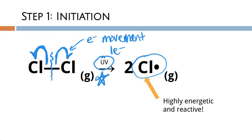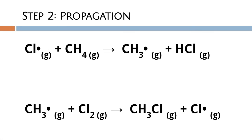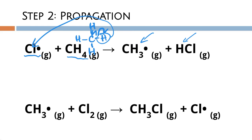Once we've generated free radicals, they are super energetic and reactive and get the rest of the reaction going. In step two, propagation, there are two key reactions. First, the chlorine free radical reacts with methane and causes homolytic fission in the methane, generating a methane free radical and HCl as the other product — breaking the C–H bond and combining that hydrogen with the chlorine.